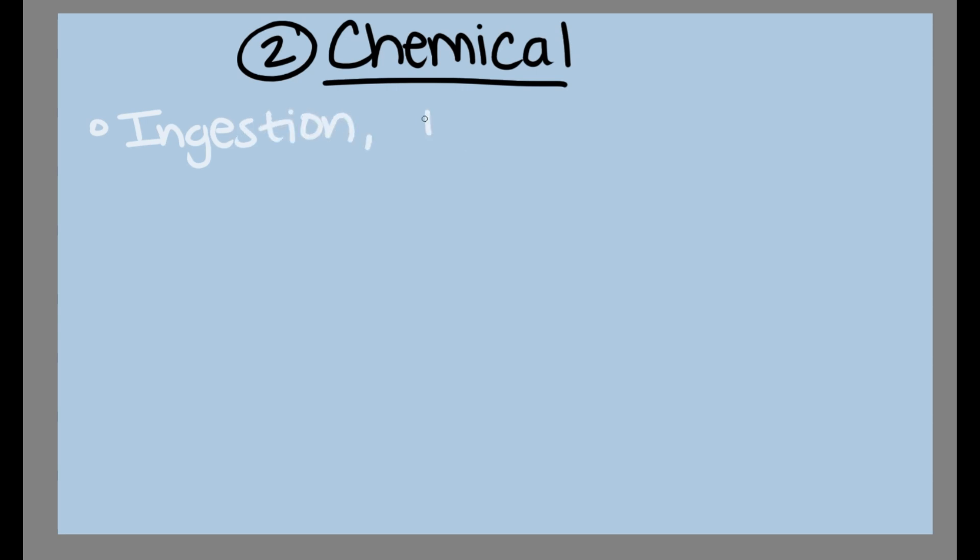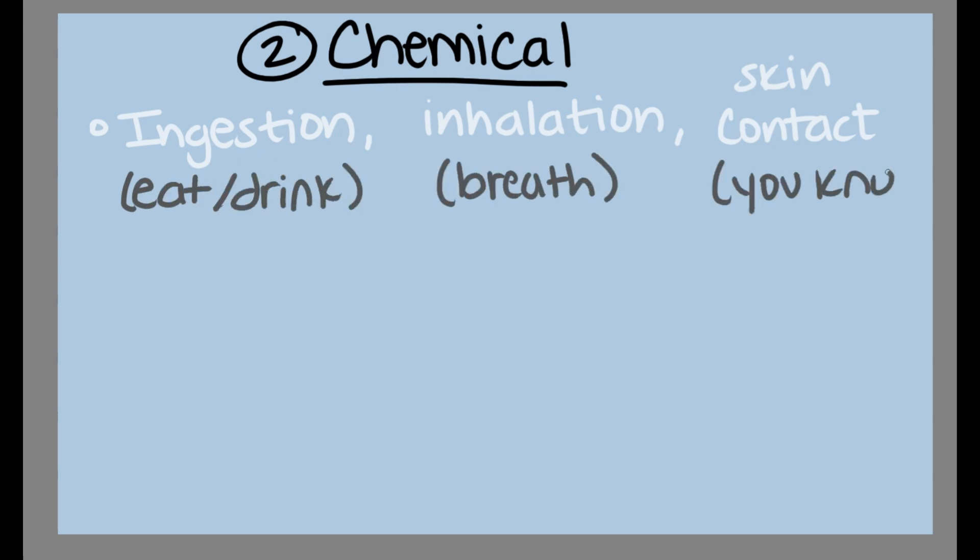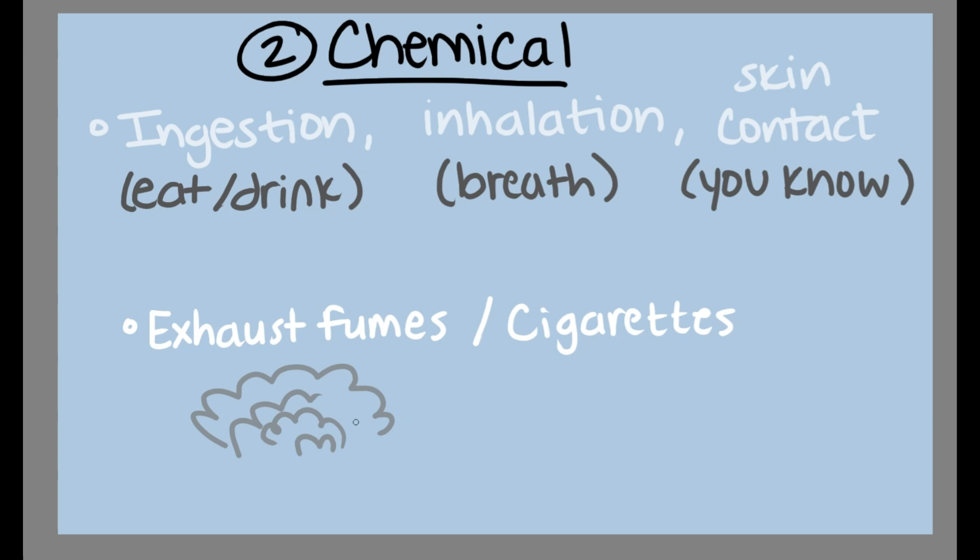A chemical mutagen is anything we intake either through ingestion, inhalation, or skin contact that has the potential to alter our DNA. In mainstream life, things like excess exposure to exhaust fumes or cigarettes can greatly increase your chances of mutations caused by chemical mutagens.